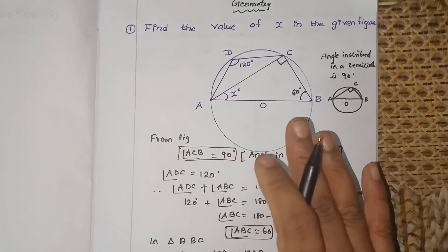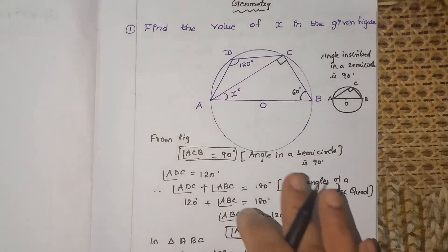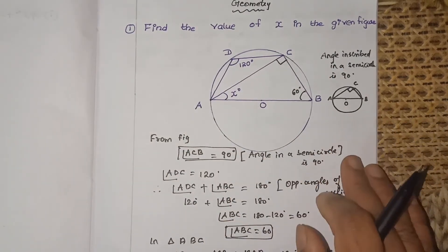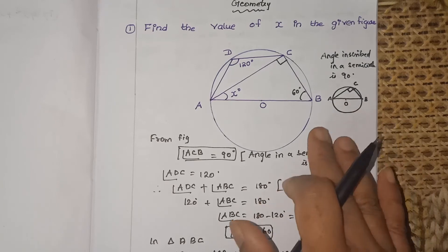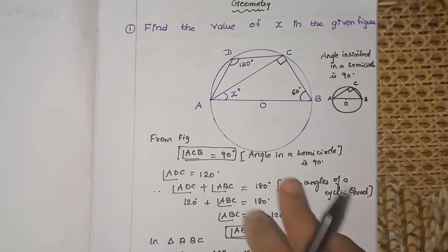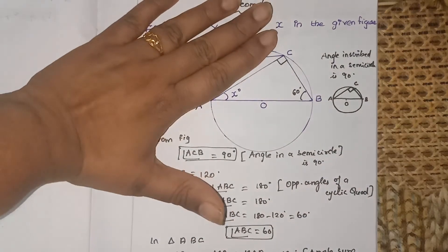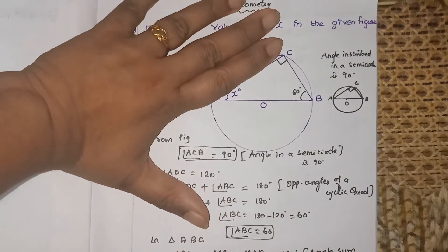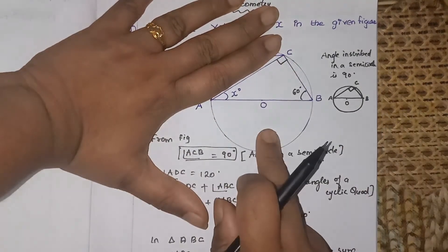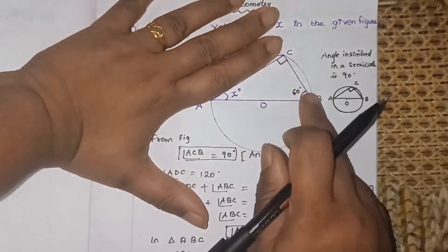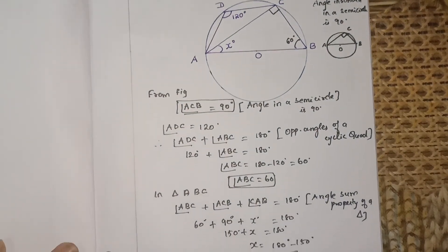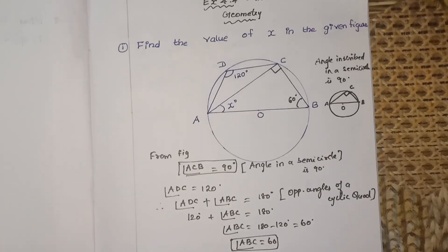When you have a sum like this, don't think it is difficult — it's very easy once you know all the concepts. You have to remember: visualize the triangle, identify the diameter giving a semicircle, and angle in a semicircle is 90 degrees. That's all. You can easily find the angles asked in the question. Thank you, children.